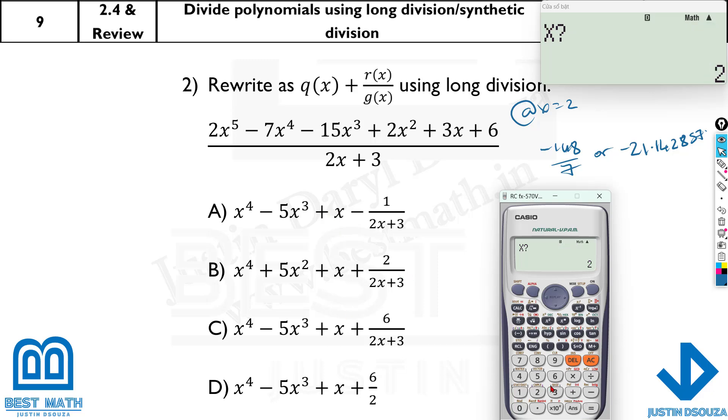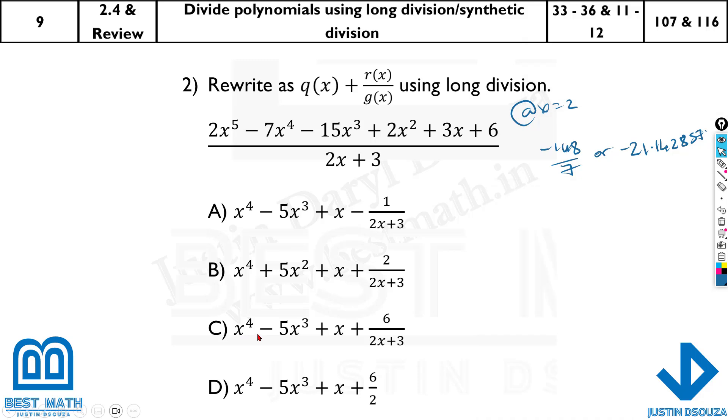Let's try the next one. It is x^4 minus 5x^3 plus x. And then it is 6 divided by 2x plus 3. Oh, here we go. This is the correct answer. Option C. Okay, sometimes it's good if you get the first or second option. Otherwise, you need to do all the options. There's nothing that can be done. So, go ahead with 1, 2 in order itself rather than jumping.